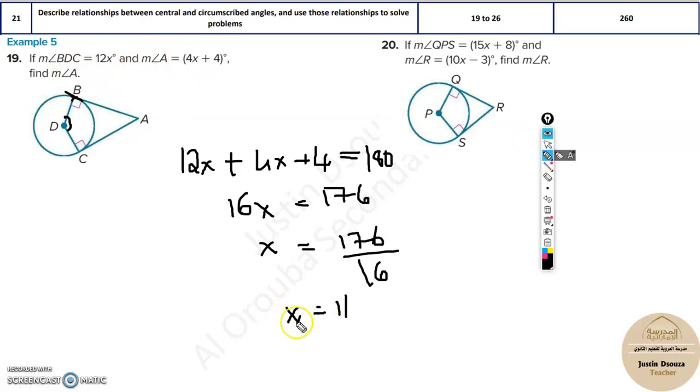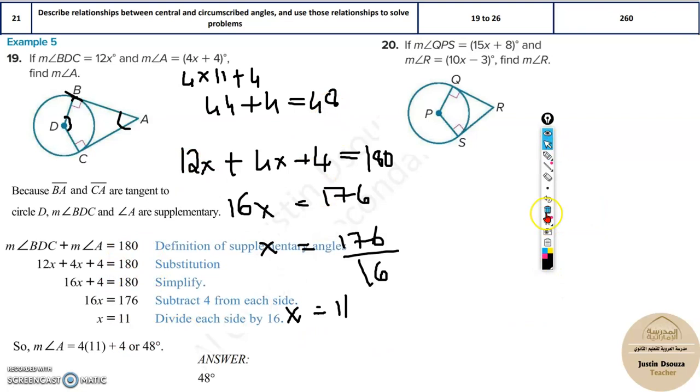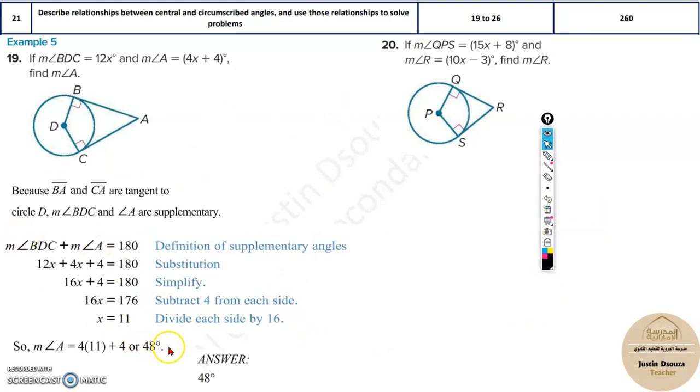They want the measure of angle A. Now please put this x value back over here. Instead of 4, put the value 11. And solve, you will get 44 plus 4. That is 48 degrees. So the measure of angle A is 48 degrees. This is how we solve it. You can see all the steps over here. This is how we can easily solve it up. Similarly, you can solve the remaining.